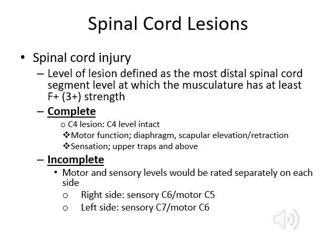Spinal cord lesions are typically defined by the level of lesion — defined as the most distal spinal cord segment level at which the musculature is at least 3-plus strength. So, for example, a complete C4 lesion — completely across the spinal cord — means that the C4 level is intact.